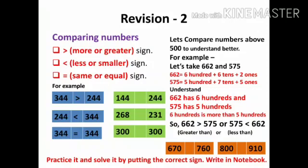In the same way, we can compare numbers above 500. For example, 662 and 575. 662 is greater than 575. 575 is smaller than 662. You can practice by taking other numbers, for example, comparing 670 and 760, or 800 and 910. Practice and solve it by putting the correct sign.